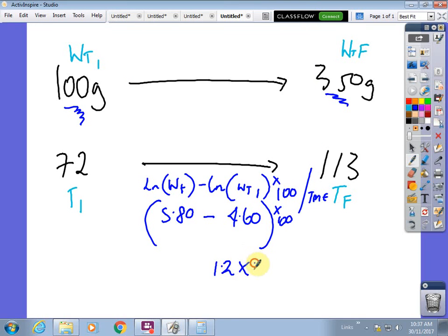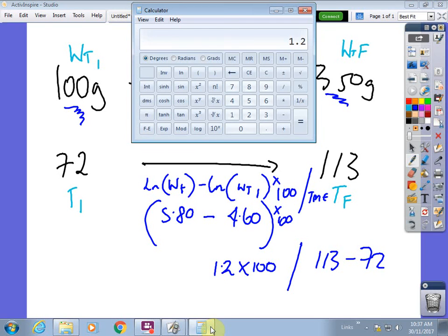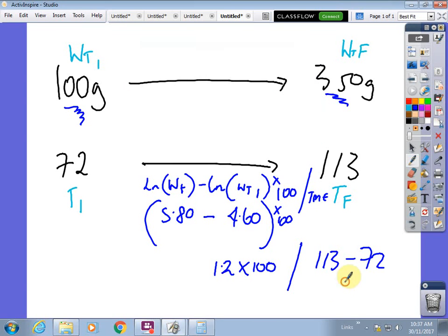That's going to be multiplied by 100 and then divided by the time frame that we have here. The time frame is going to be 113 minus 72. If we go clear that off again, 113 minus 72, it's going to be 41. Some people might have been able to do that in their head.